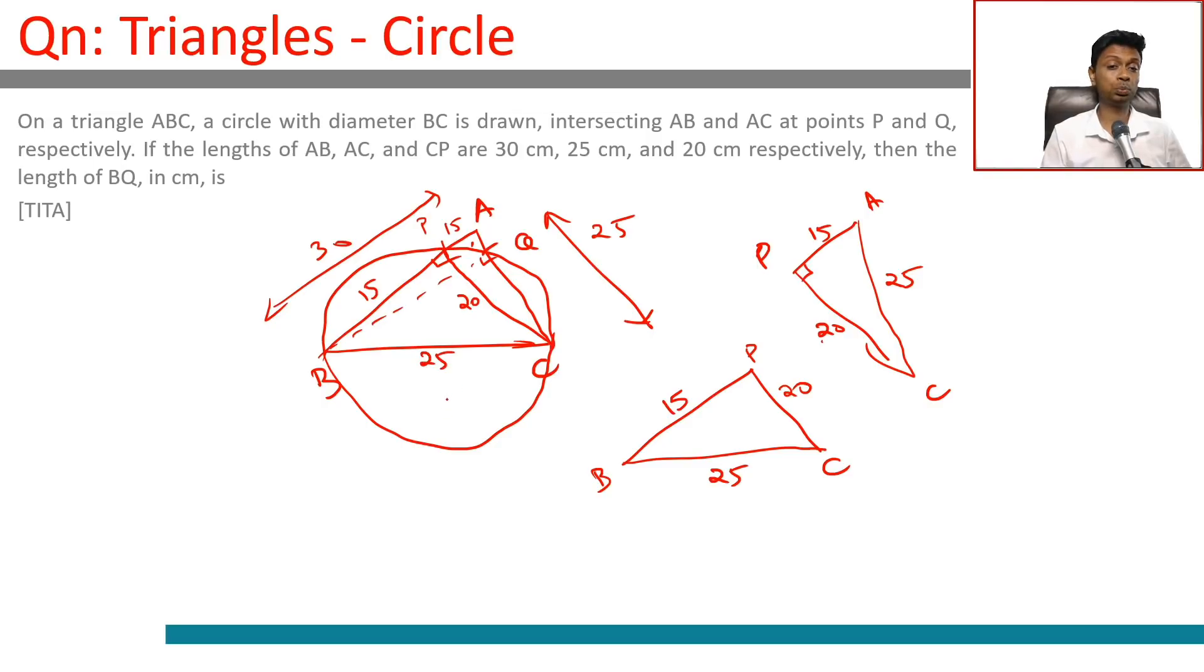Now we need to find BQ. The best way to do this is using the idea that area of the triangle is half into base into height, which is half into 30 into 20, half into AB into PC. This also is half into 25 into BQ. 25 is nothing but AC. Plug this in and then we're through. We'll be able to find BQ. This half and half disappear.